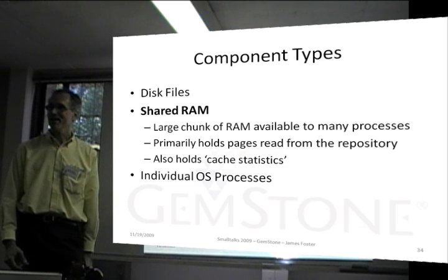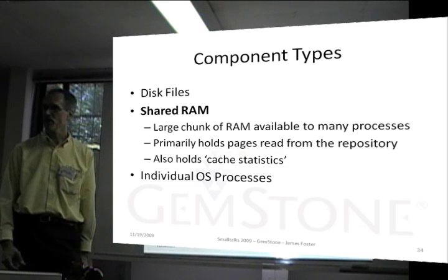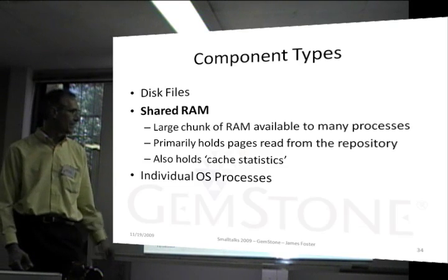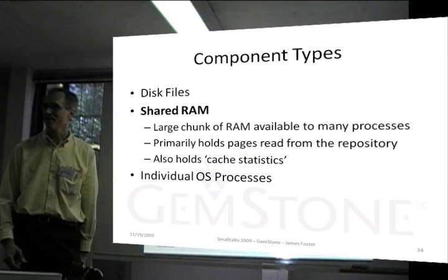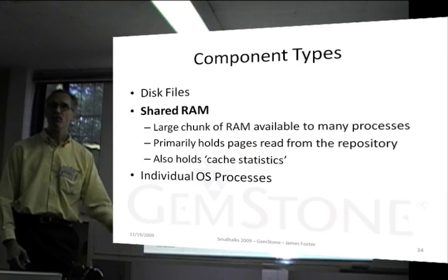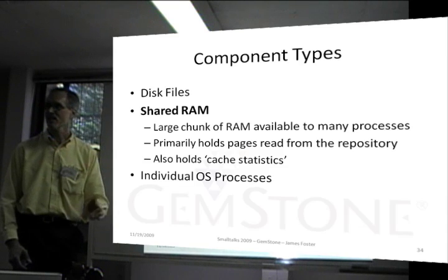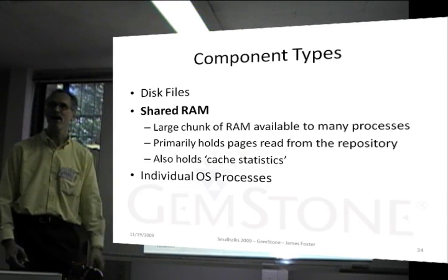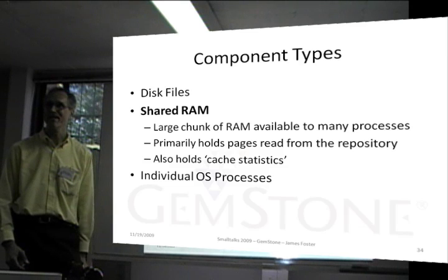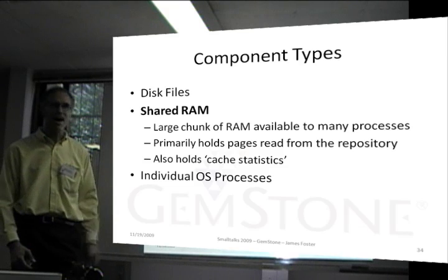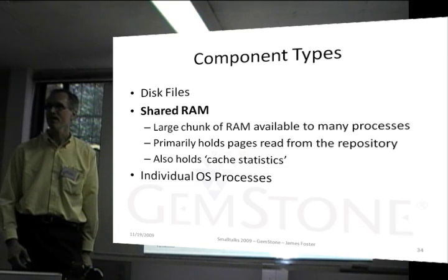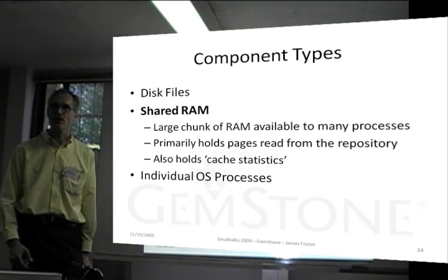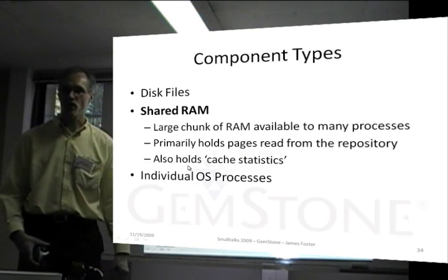Caching — we can get lots of objects in memory without taking up space in each virtual machine. It primarily holds pages read from the repository, but it also holds cache statistics, so each process running on a machine writes information about itself into shared memory. Other processes can then look at that shared memory and learn things about each running process. There's a special process that continually reads all the statistics and periodically writes them out to a file, so if you want to do tuning or if the system crashes, you can determine what it was doing.